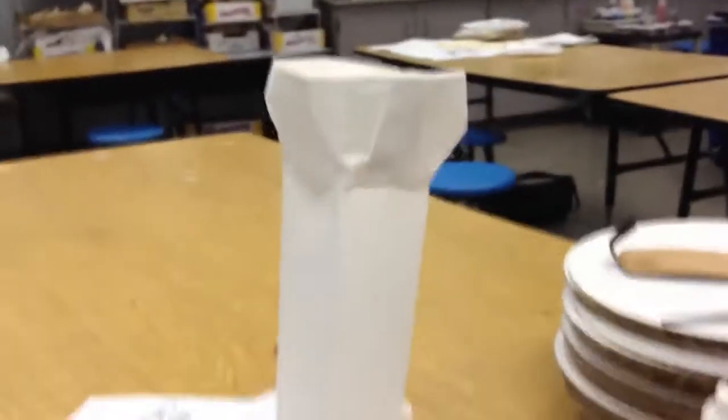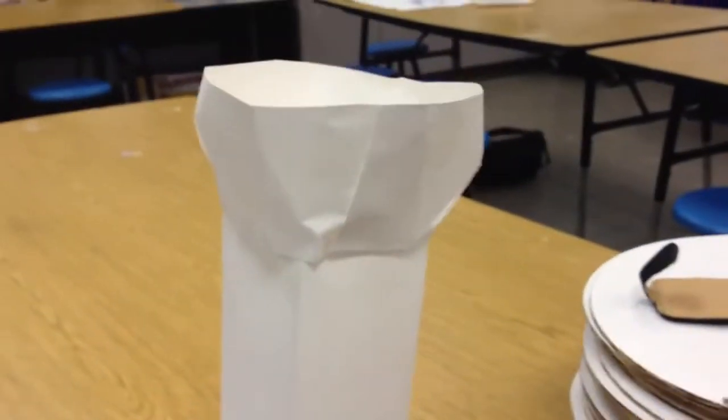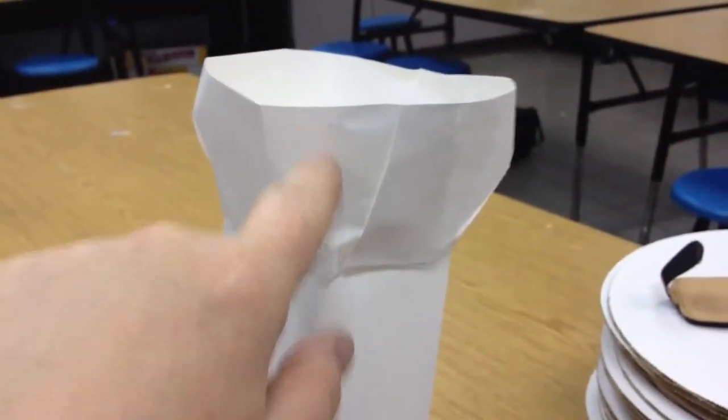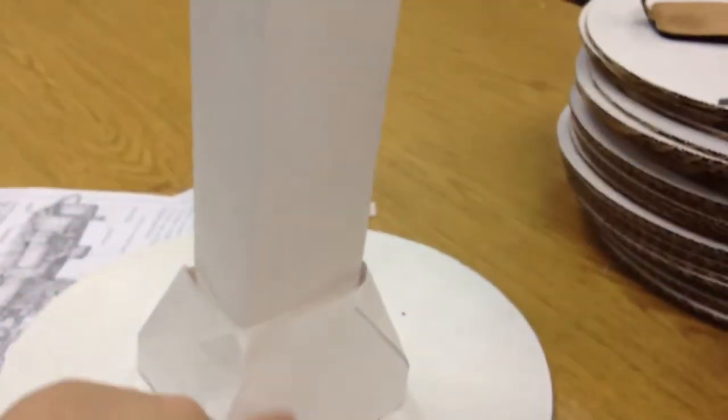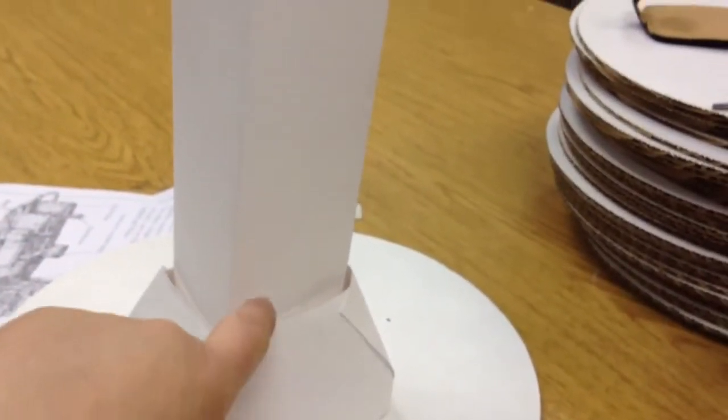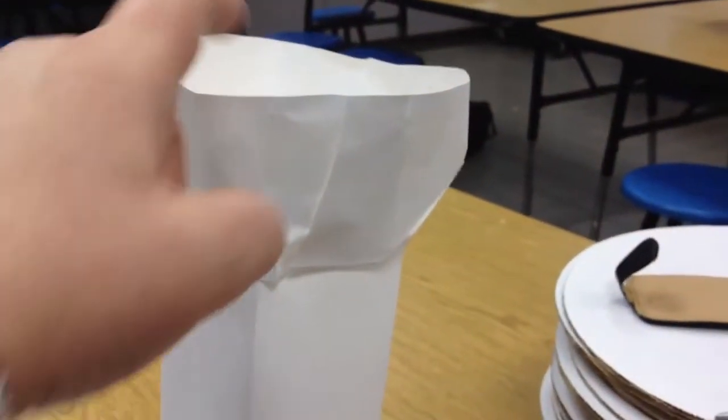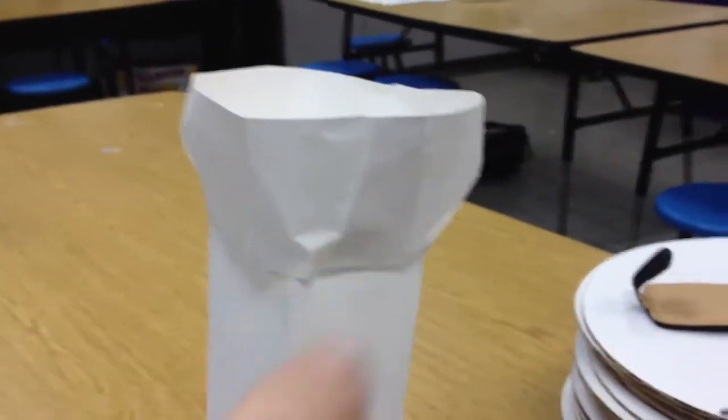And this is what I have so far. Now I've got to cut the crenellations on the top, where people stand and pour boiling water down on the invaders below and stand behind the crenellations and shoot arrows.